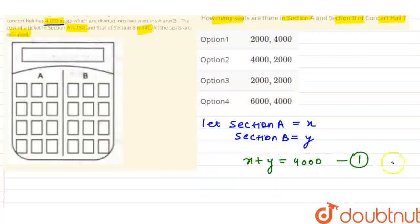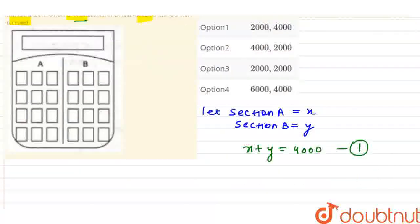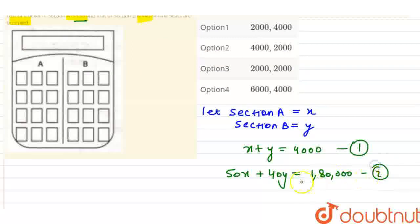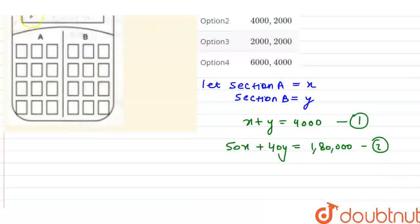The cost of each seat in section A is 50 rupees and in section B is 40 rupees, so 50x plus 40y equals 1 lakh 80,000. This is the total revenue generated by tickets. We can solve this using the matrix method.